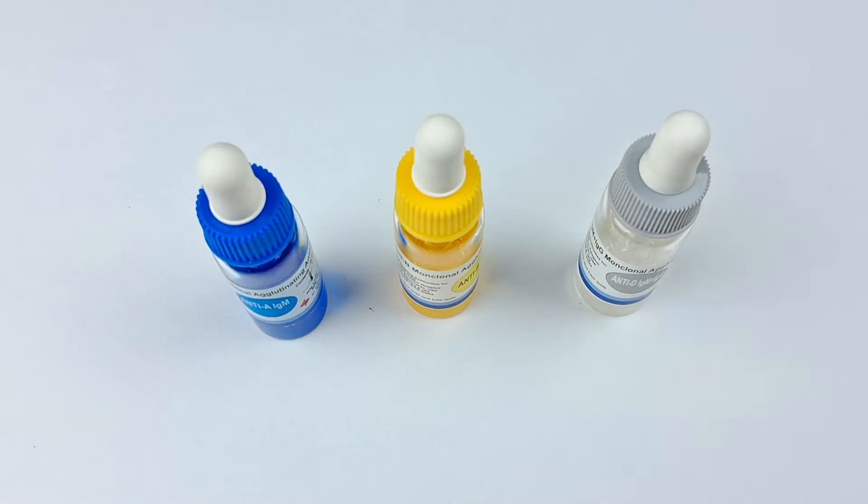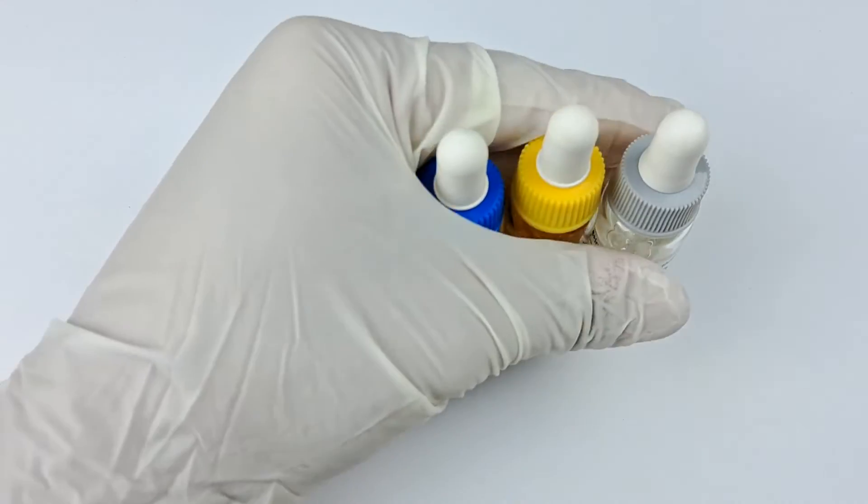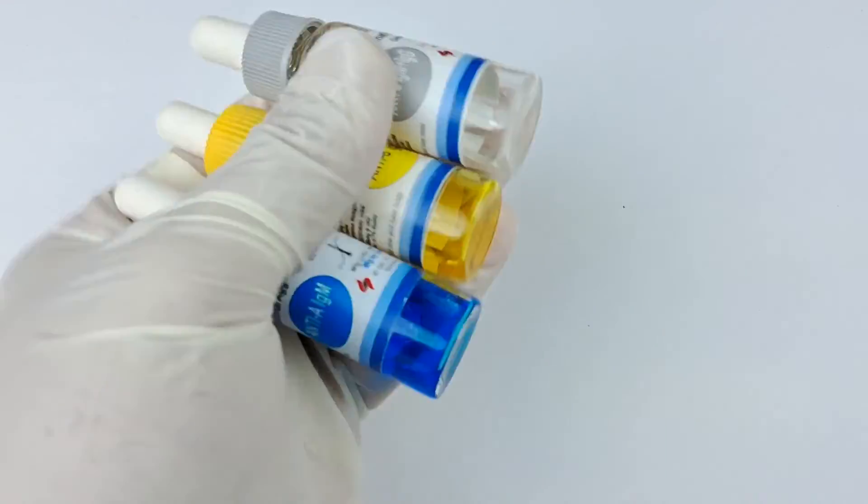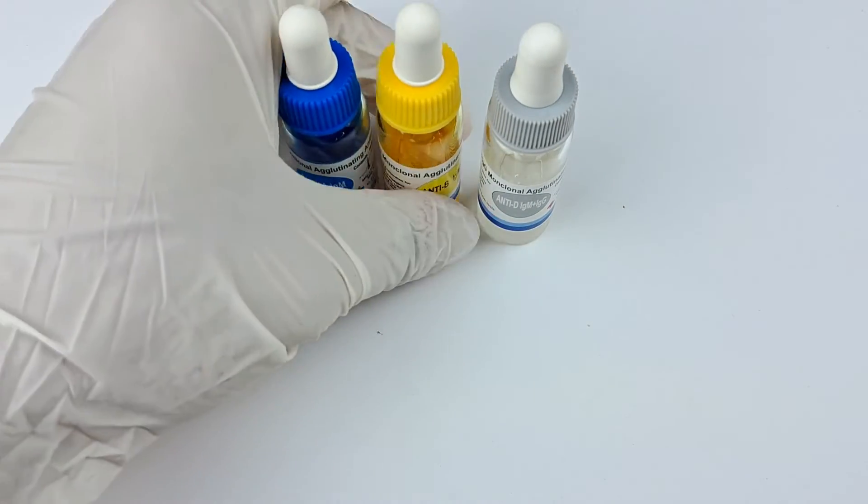Homogenize the contents of the antisera antibody vials by inverting each bottle three to five times and allow them to equilibrate to room temperature.